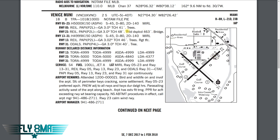Next, runway 13-31 — hard surface, 4,999 feet long, 150 feet wide, asphalt. Single wheel 45,000 pounds, dual wheel 80,000 pounds, two dual wheels in tandem 140,000 pounds. As an example of two dual wheels in tandem, that would be like a Boeing 757, Boeing 767, or Airbus A330 — though obviously those airplanes weigh more than 140,000 pounds and the runway is pretty short, so they can't use it anyway.